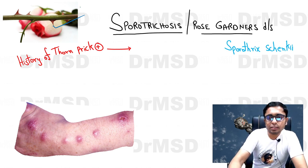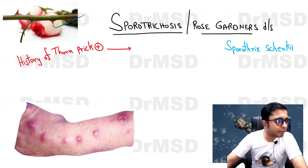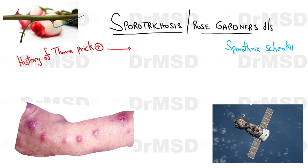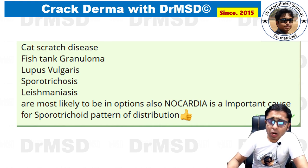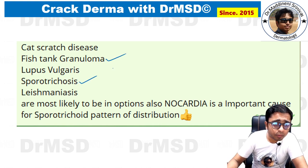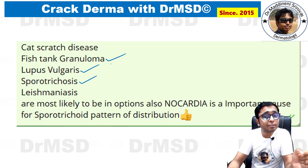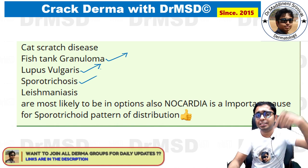There is one very important histopathological finding in sporotrichosis — if you know it, please type your answer in the comment section. The sporotrichoid pattern is not exclusive to sporotrichosis; it can also be seen in fish tank granuloma (also called swimming pool granuloma) and in lupus vulgaris. If you know the causative organism of fish tank granuloma and lupus vulgaris, please type your answer in the comments.